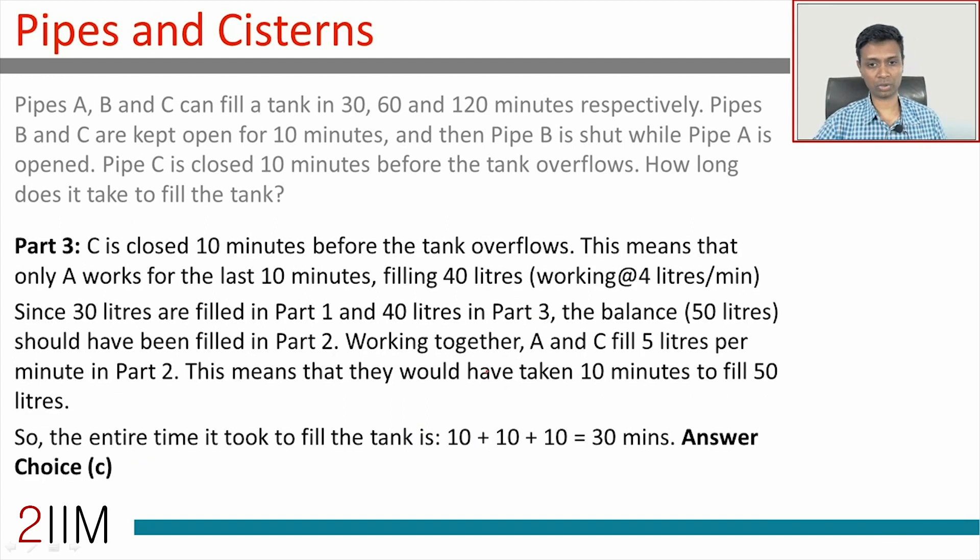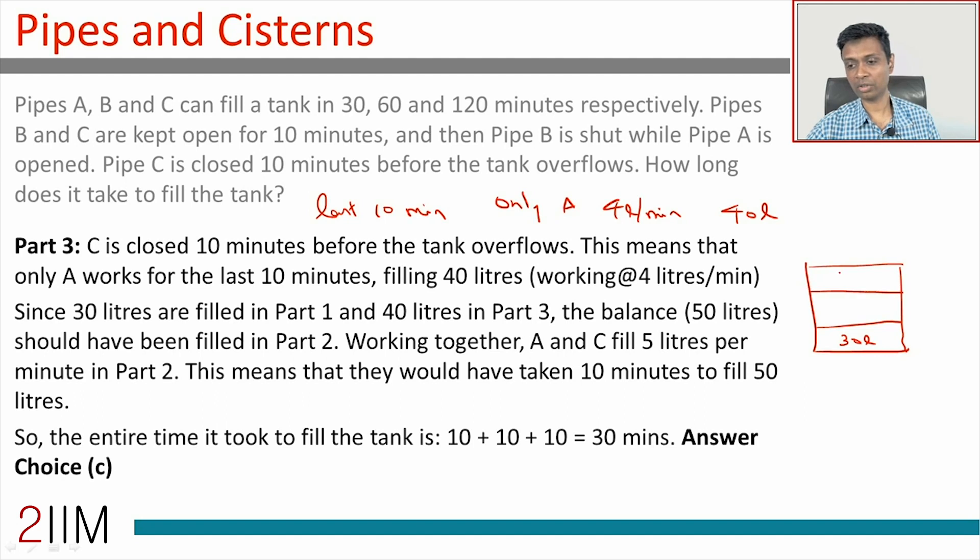Let's go to the third step. Pipe C is closed 10 minutes before the tank overflows. In the last 10 minutes, during this spell, only A is opened. A fills at the rate of 4 liters per minute. We've already seen that in 10 minutes, A will fill 40 liters. So we have this tank—the first 10 minutes, 30 liters get filled. The last 10 minutes, 40 liters get filled. This is by B and C; this is by A.